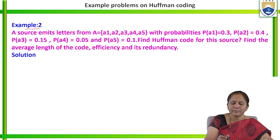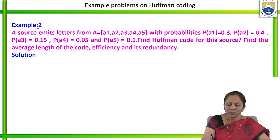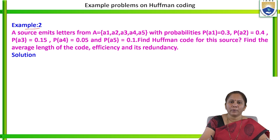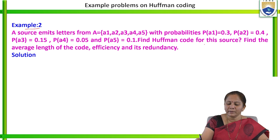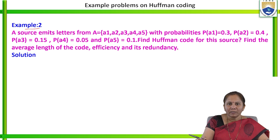Let us solve Example 2. A source emits letters from A = {A1, A2, A3, A4, A5} with probabilities: P(A1) = 0.3, P(A2) = 0.4, P(A3) = 0.15, P(A4) = 0.05, and P(A5) = 0.1. We have to find the Huffman code, average length, efficiency, and redundancy.